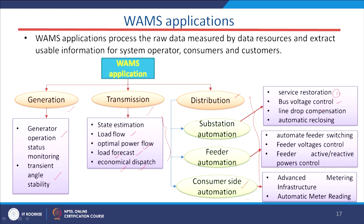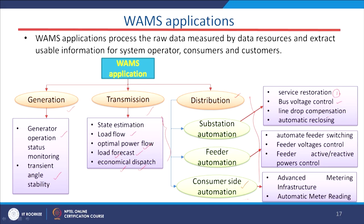The second feature is bus voltage control. At certain buses, the voltage profile may drop or collapse due to lack of reactive power compensation. Remedial controls can be applied from the WORMS technology to control bus voltage. Line drop compensation and the automatic reclosing facility can also be drawn from WORMS.